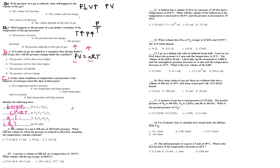The volume of a gas is 450 mL at 350 kPa. What will the volume be if the pressure is reduced to 60 kPa, temperature constant? This is Boyle's Law: P1V1 = P2V2. So 350 × 450 = 60 × V2. Divide both sides by 60, and I get 2,625 mL. The answer is D.